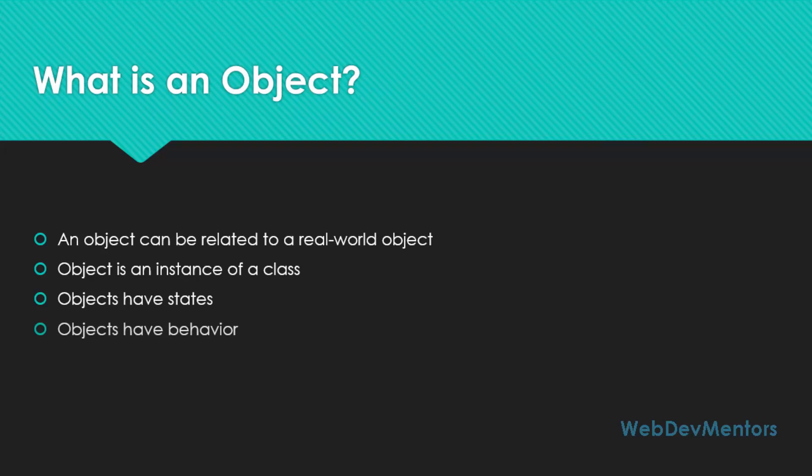Objects also have behaviors. If you take up a car as an object, behaviors can be the starting of the car, braking of the car, stopping of the car, and the engine — all of those are considered as a behavior. So states relate to the variables of the class and behavior relates to the methods of the class that you are going to create.